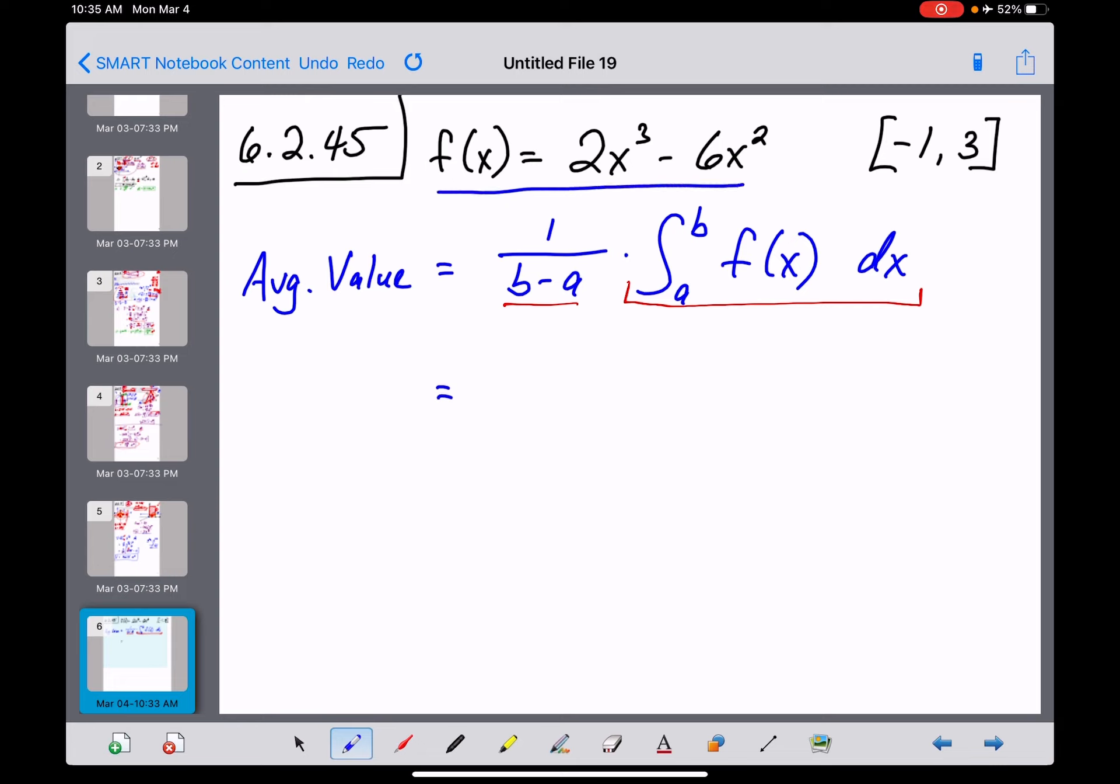So we've been given a function and we've been given an interval and that's all we need. 1 over b minus a, our b value is 3, and then minus our a value of negative 1 means that's actually a 3 plus 1. We multiply that by a definite integral now from negative 1 to 3 of this function, which is 2x cubed minus 6x squared taken with respect to x.